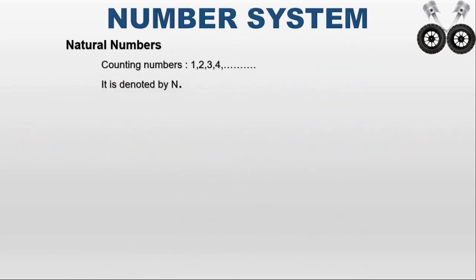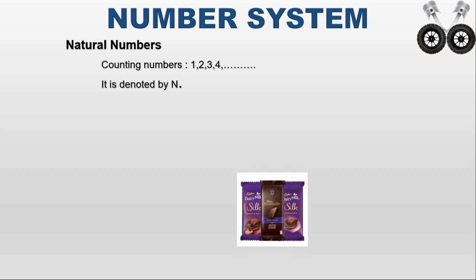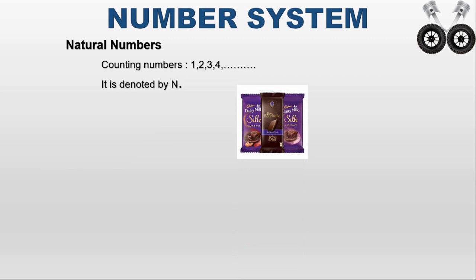Before seeing integers, we will first see what a natural number is. The counting numbers are called natural numbers. For example, how many fingers are on your hand? You start to count from 1, 2, 3, 4, and 5. That is called a natural number. Similarly, see the figure — how many chocolates are there? You start to count from 1, 2, 3 — so there are 3 chocolates. Natural numbers are denoted by N and start from 1.